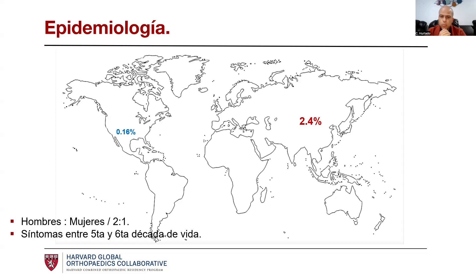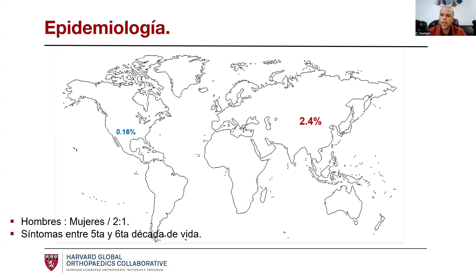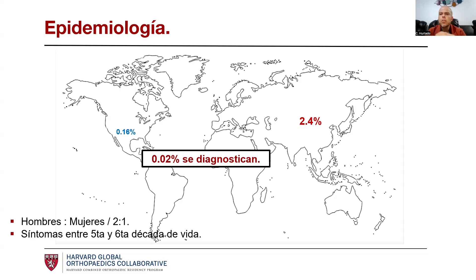Se asocia también en ocasiones con la enfermedad conocida como DISH y con la espondilitis anquilosante. Hay un estudio que aporta un dato curioso: en pacientes con esquizofrenia, hablando de orientales, hasta en un 20% se han encontrado hallazgos compatibles con esta osificación. El dato más relevante es que se estima que solo el 0.02% de los casos, que además ya son pocos, son diagnosticados.